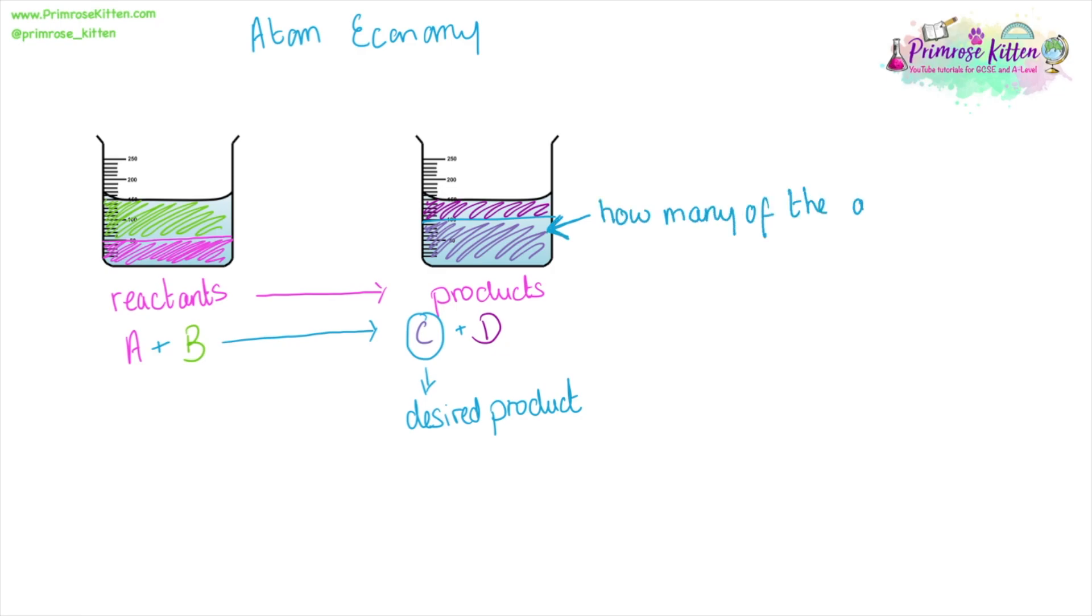The atom economy is how many of the atoms in the reactants, how many atoms that we put in at the start, end up in the product that you want, that end up in your desired or your required product. And we are looking at the MR of the atoms, not just the number of the atoms, but the mass of atoms.